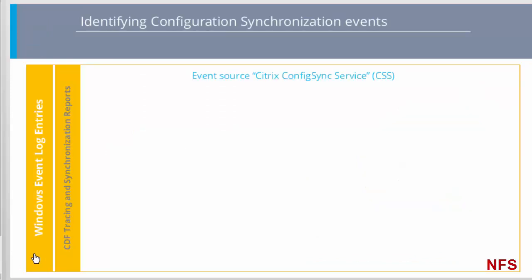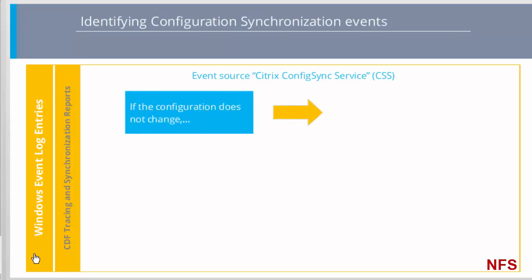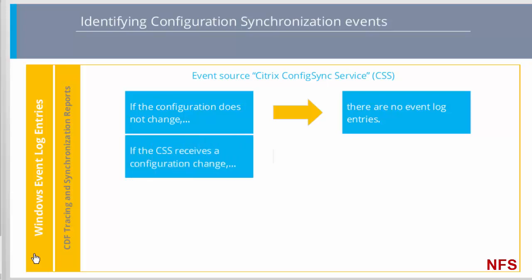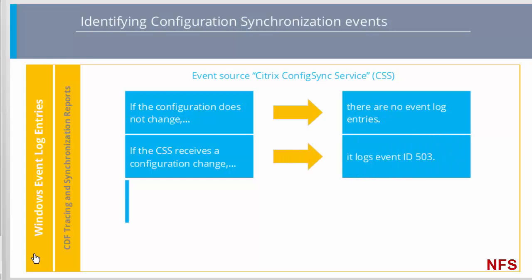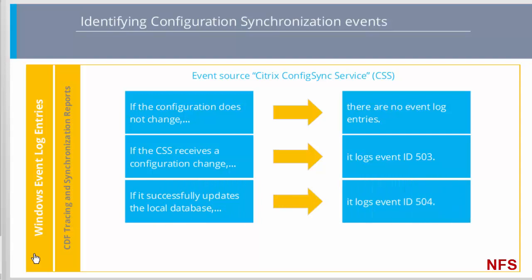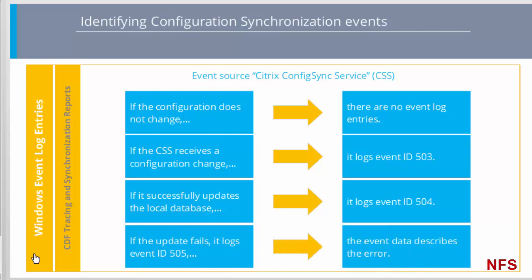How can we troubleshoot configuration synchronization by checking Windows event logs? Configuration synchronization changes occur when the LHC local DB is updated from the central site database. If there has not been a need for configuration change, then no events are logged by the Citrix Config Sync service on the secondary broker. If the CSS receives a configuration change, it logs event ID 503. If the local DB was then successfully updated, it logs event ID 504. If the update fails, it logs event 505.